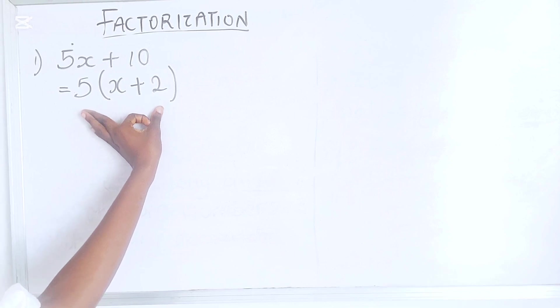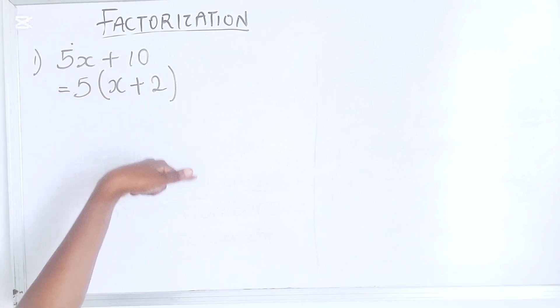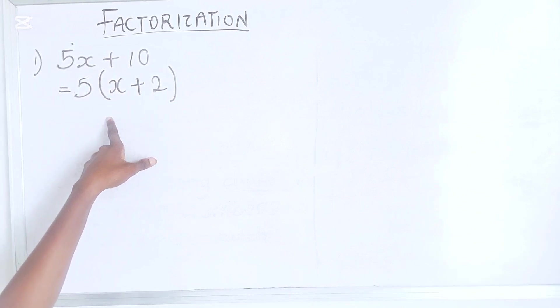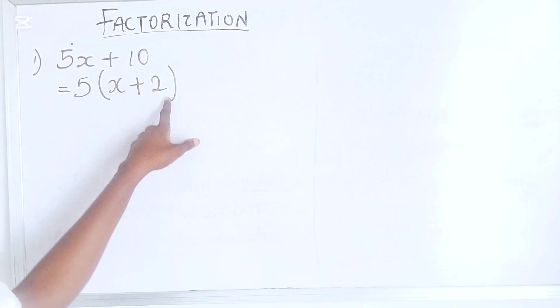If you look at this very well, you would see that this is expansion. When you expand this, you would get your given value. So you see why factorization is the reverse of expansion. Open this bracket. 5 times X is 5X plus 5 times 2 is 10. You would get your question.